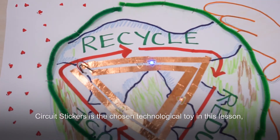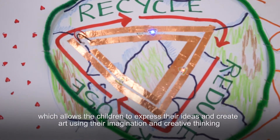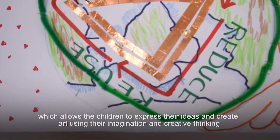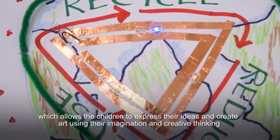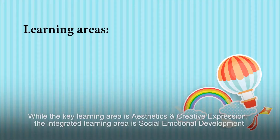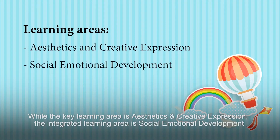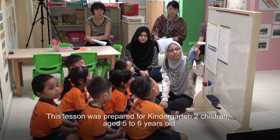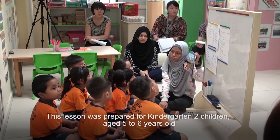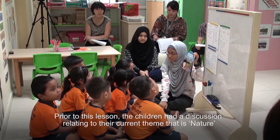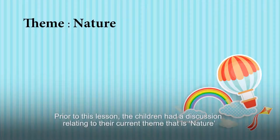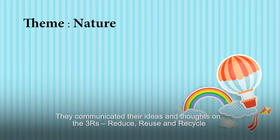Circuit Stickers is the chosen technological toy in this lesson, which allows the children to express their ideas and create art using their imagination and creative thinking. While the key learning area is aesthetics and creative expression, the integrated learning area is social-emotional development. This lesson was prepared for kindergarten two children aged five to six years old. Prior to this lesson, the children had a discussion relating to their current theme — nature — and communicated ideas on the three Rs: reduce, reuse, and recycle.